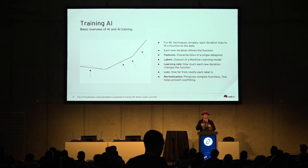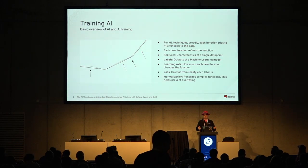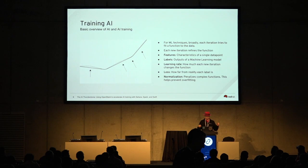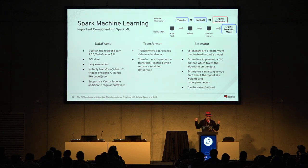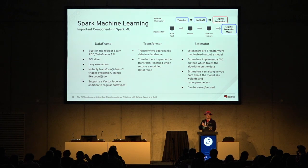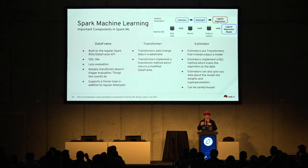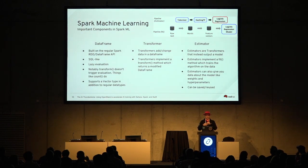Finding the right variables could take many tries, but fortunately Spark has a nice feature that helps with this. When dealing with Spark and machine learning, there are four important concepts: data frames, transformers, estimators, and pipelines. Pipelines are just a combination of transformers and estimators, and they operate on data frames.